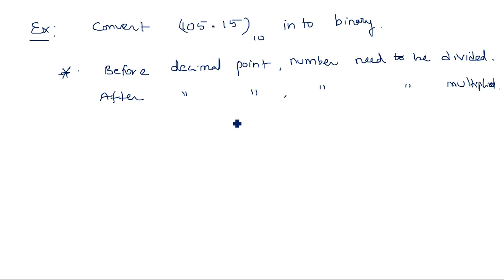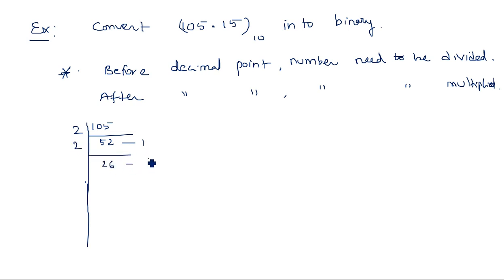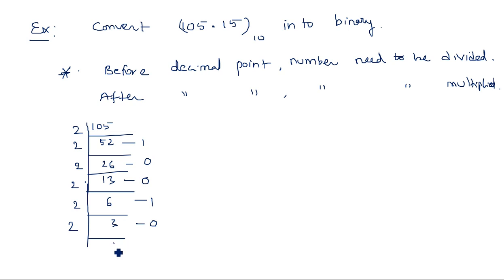For 105: 105 ÷ 2 = 52 remainder 1. 52 ÷ 2 = 26 remainder 0. 26 ÷ 2 = 13 remainder 0. 13 ÷ 2 = 6 remainder 1. 6 ÷ 2 = 3 remainder 0. 3 ÷ 2 = 1 remainder 1. Reading remainders from bottom to top: 1101001.